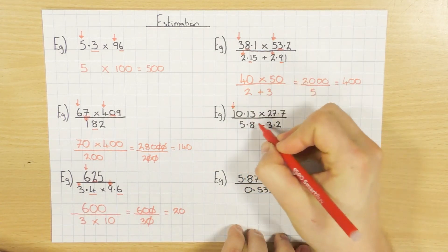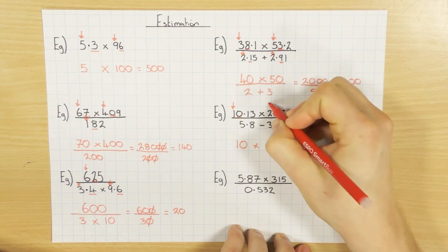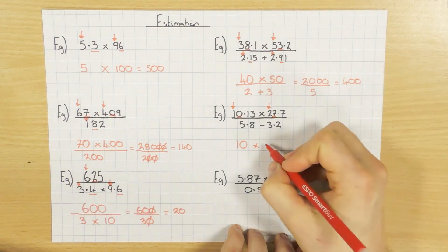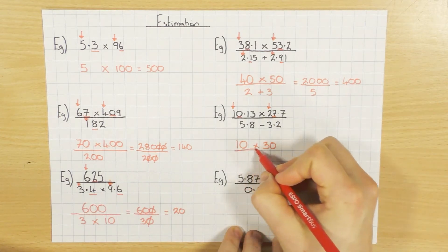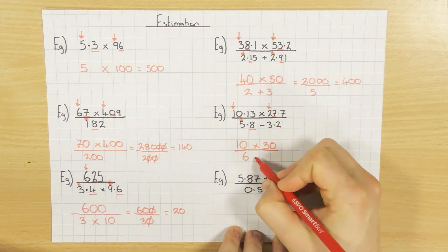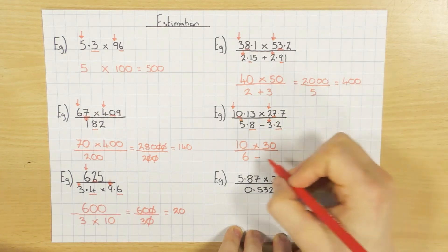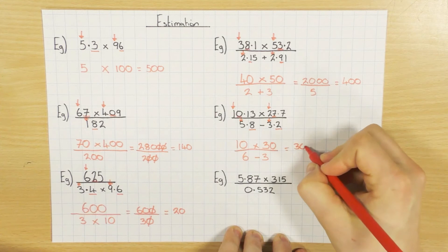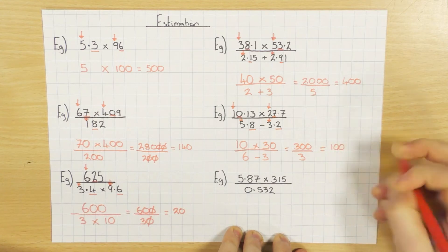Let's look at this one. The first significant figure is 1, and 0 tells me to round down, so it stays as 10. For 27.7, the 2 is the first significant figure, and 7 tells me to round up, so the 2 becomes 3, making it 30. For 5.8, the 5 is the first significant figure and 8 tells me to round up, so it becomes 6. For 3.2, the 3 is the first significant figure and 2 tells me to round down, so it stays as 3. 10 times 30 is 300, divided by 6 take away 3 — 6 minus 3 is 3 — so 300 divided by 3 is 100.